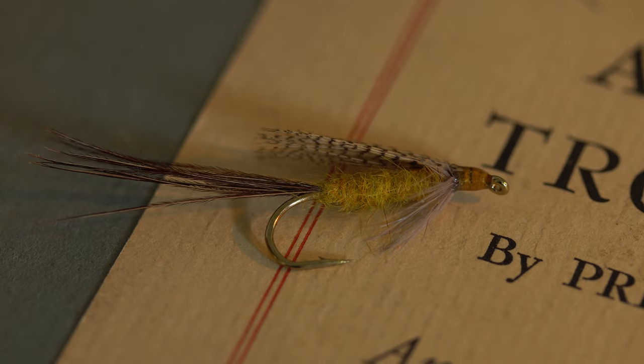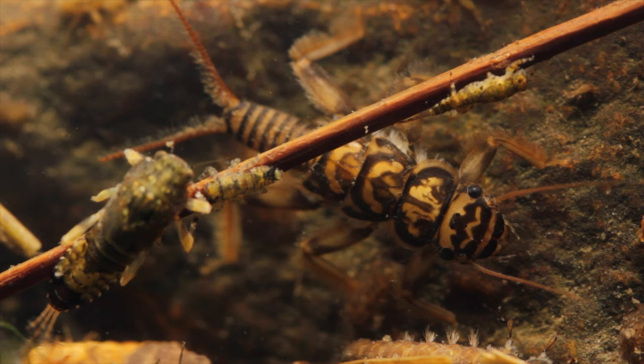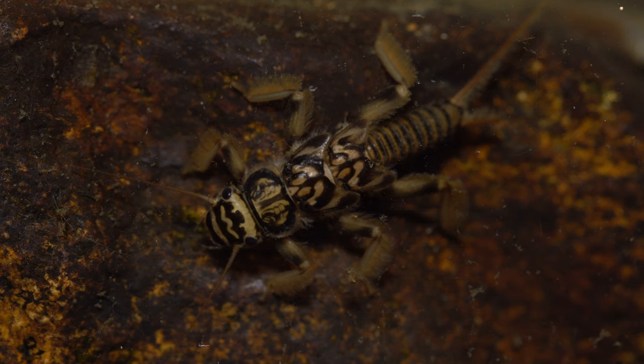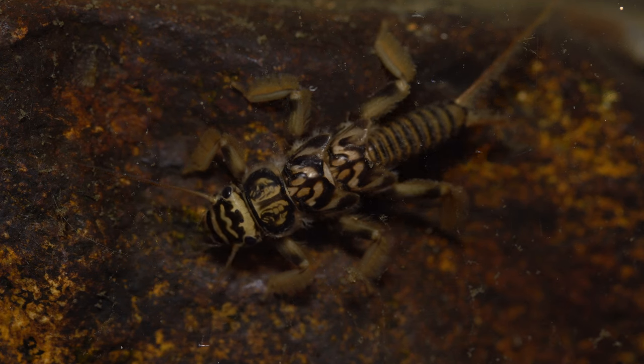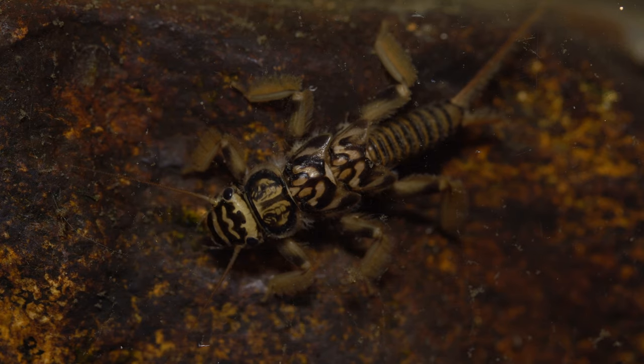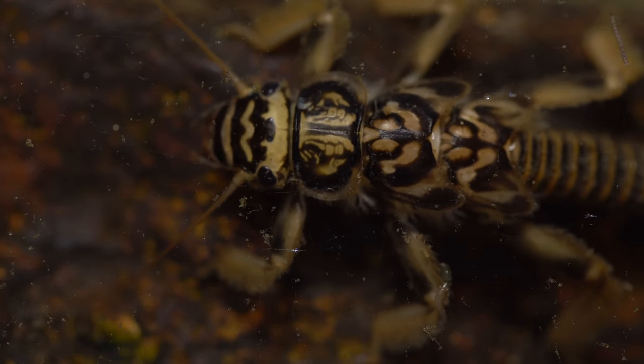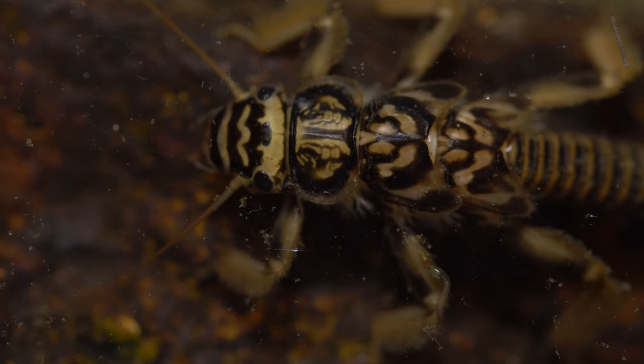The Stonefly Creeper is supposed to imitate a yellow or golden stonefly nymph, which I think it does quite well. We are very fortunate here in northwestern New Jersey to have tremendous water quality that allows extremely sensitive stoneflies to thrive in many of the area's rivers and streams.